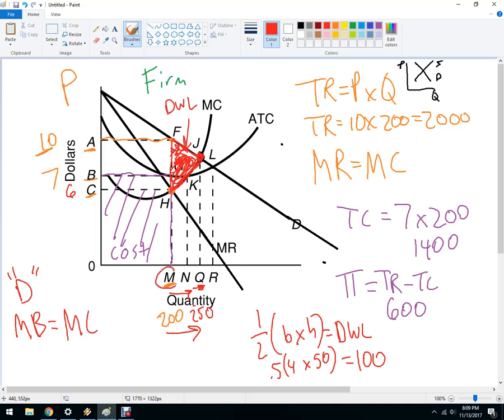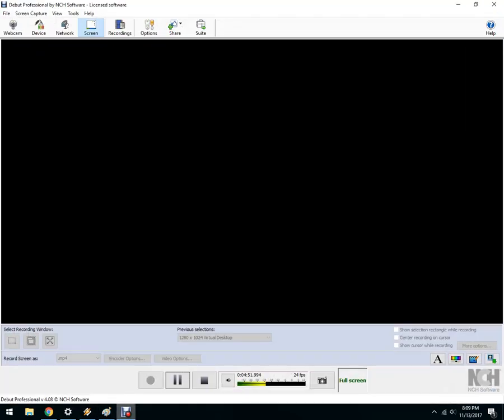So because the monopolist is going to produce just at M, we're going to lose out on this red section. I hope that answers your question. Thank you. Bye-bye.